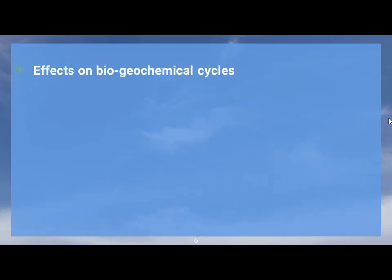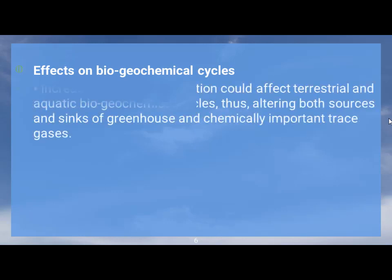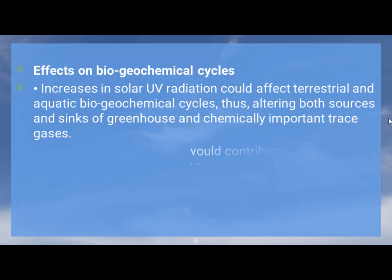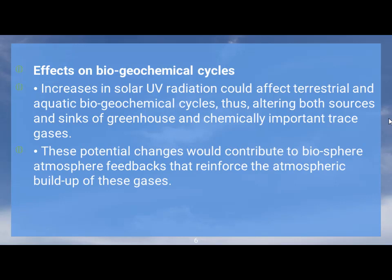Regarding effects on biogeochemical cycles, increases in solar UV radiation could affect terrestrial and aquatic biogeochemical cycles, thus altering both sources and sinks of greenhouse and chemically important trace gases. These potential changes would contribute to biosphere-atmosphere feedbacks that reinforce the atmospheric buildup of these gases.